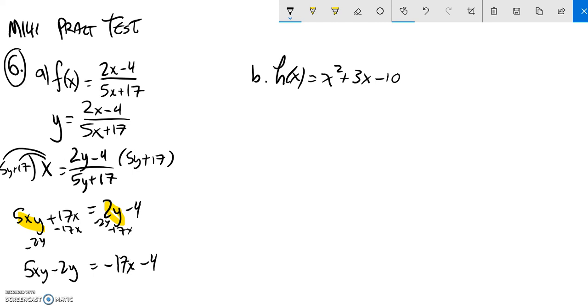So here, these terms both have a y in it. So I can factor the y out. So I have y times 5x minus 2.